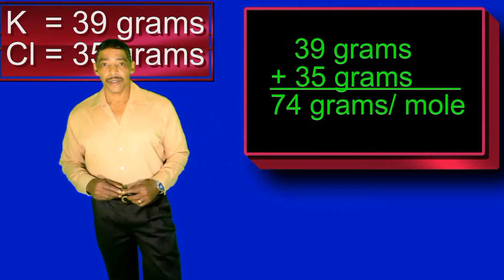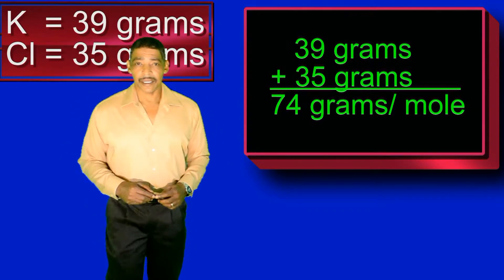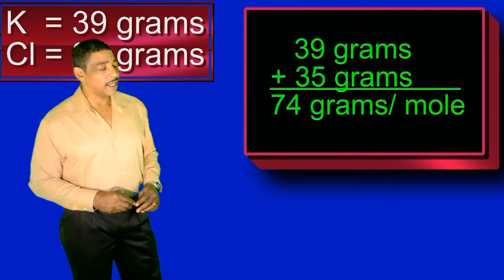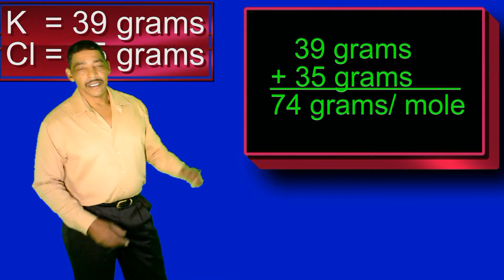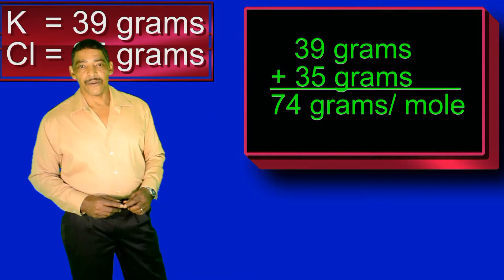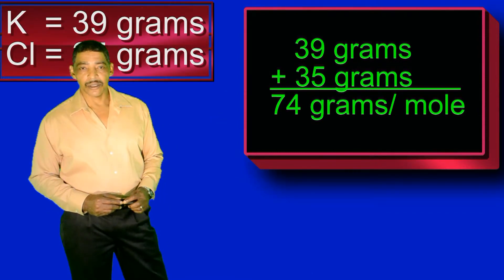Therefore, the gram formula mass for potassium chloride is simply 74 grams per mole.